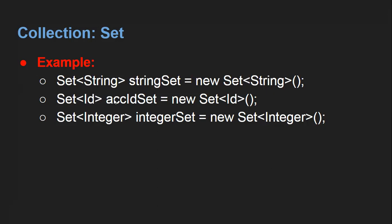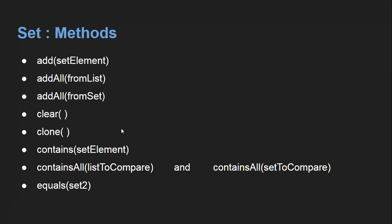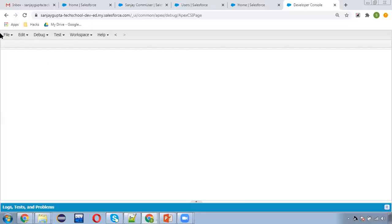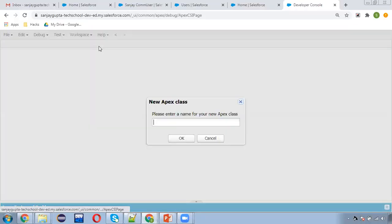These are some examples of how we can create a Set. You need to write Set, then in angle brackets write the data type — here String, ID, and Integer are the three types mentioned. These are some methods we can use to create or work with a Set. I'm going to create a new Apex class called SetDemo.